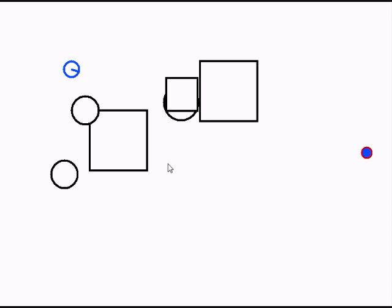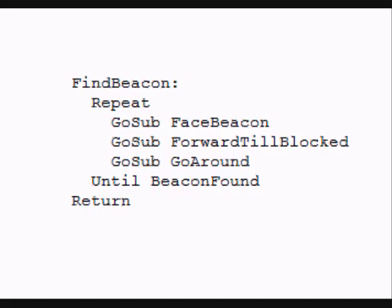Let's look at how simple this kind of algorithm could be coded. Look how simple it is to create this algorithm. We create a FindBeacon subroutine. This subroutine has in it a repeat until loop that continues until it's found the beacon.